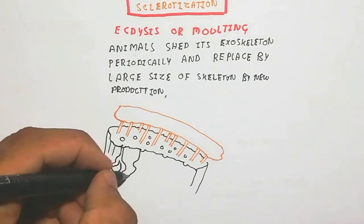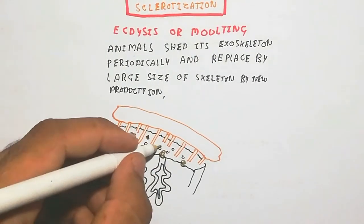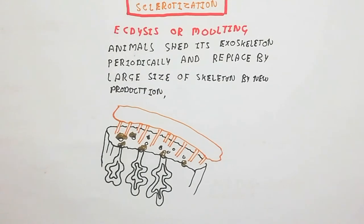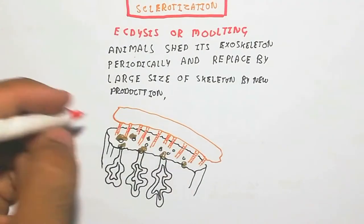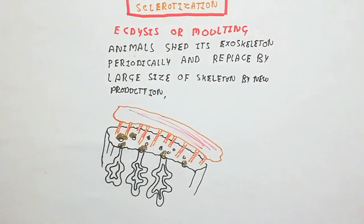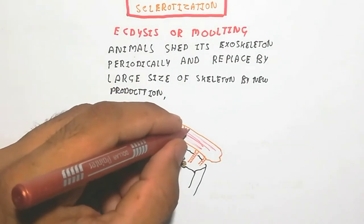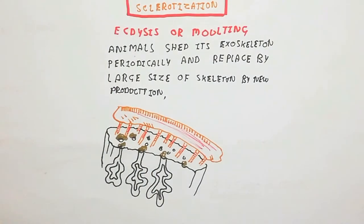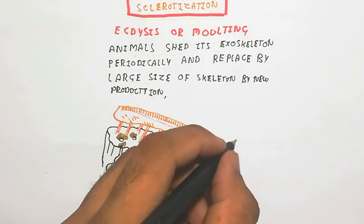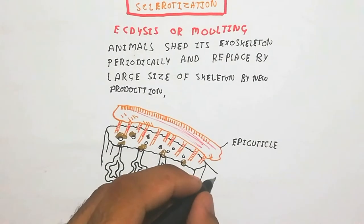The old endocuticle is digested by enzyme production. An animated diagram shows the endocuticle in a layered structure. The gland that secretes the enzyme is called actaizen — that is the major name of the enzyme involved in this process.